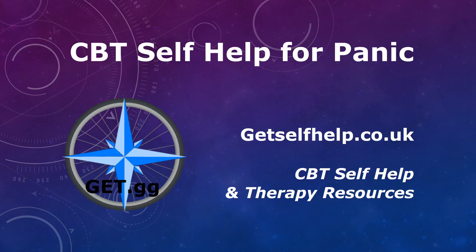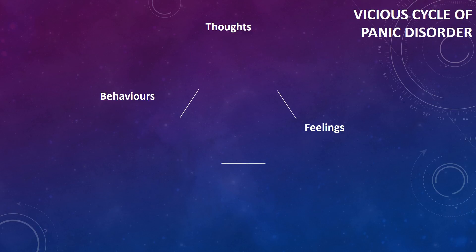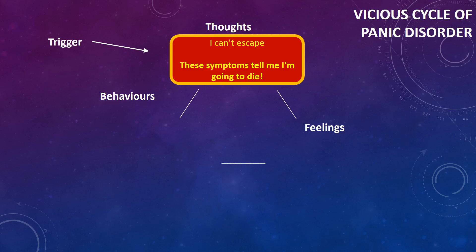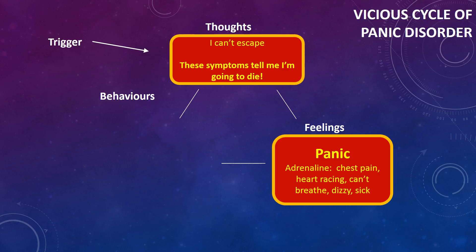CBT self-help for panic from getselfhelp.co.uk. The vicious cycle of panic disorder starts with a trigger — whatever it is: a thought, a sensation, an external event, a place you find yourself in. And we tend to think something like, 'I can't escape, I've got to get out of here,' so we start feeling anxious and the adrenaline kicks in.